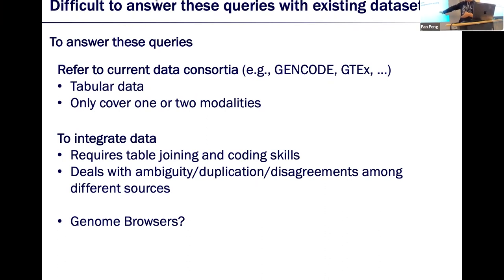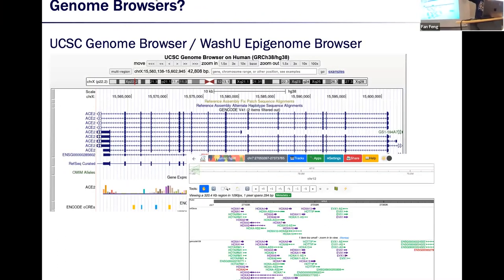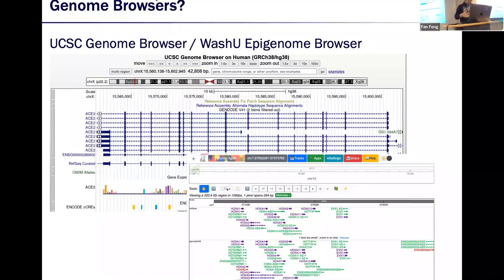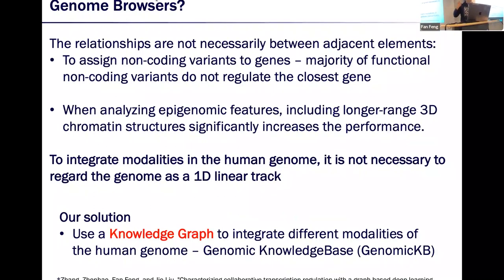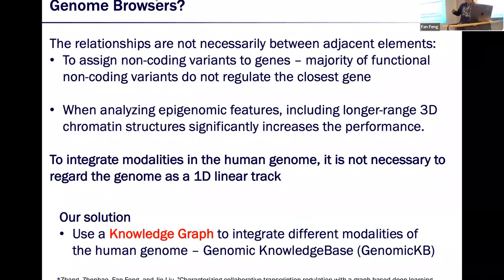We also have to deal with ambiguity, duplication, or disagreements among different data sources. Luckily, we have some tools, especially genome browsers, to help integrate data — for example, UCSC Genome Browser and WashU Genome Browser. They represent the human genome as a 1D linear track and place entities such as genes and regulatory elements on that track according to their genomic coordinates. However, not every question can be answered by genome browsers, because relationships between entities are not necessarily between adjacent elements. For example, the majority of functional non-coding variants do not regulate the closest gene.